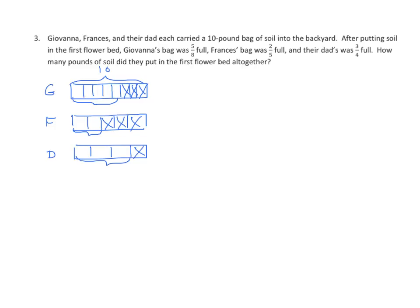We want to know how much they dumped out into that first flower bed altogether. We know that we have fractional parts of ten. So all we have to do is find the three fractional parts separately for Giovanna, Francis, and Dad. Then, once we find the fractional part and multiply it by ten, we will have the amount of soil that each of them dumped in that first garden. Of course, that's all together, so we'll have to find the sum of the three addends.